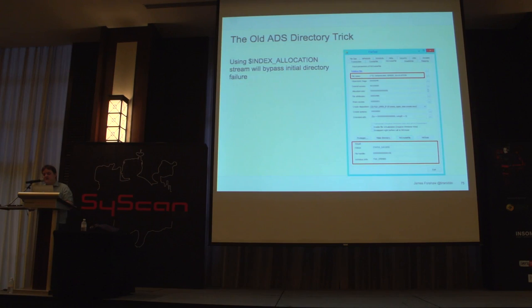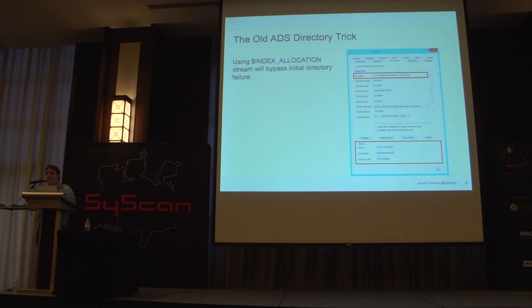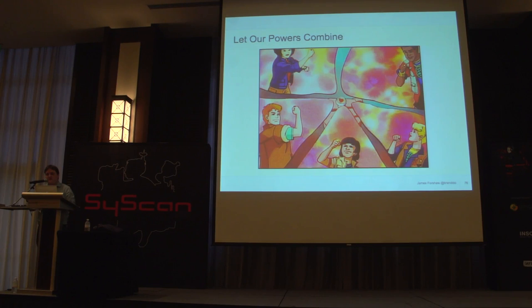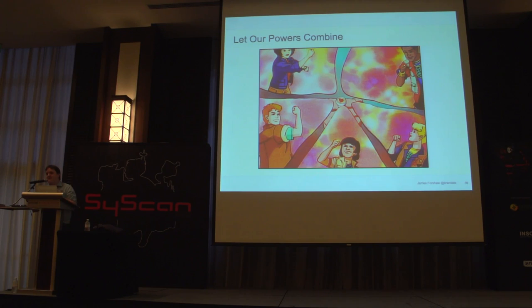There's also the old ADS stream trick of \$INDEX_ALLOCATION — specifying that as your stream type is a classic trick to create directories using normal file APIs. It also works for file-level symbolic links: specifying the name with \$INDEX_ALLOCATION at the end will actually open the target of the symbolic link, even though the target is a file. That's a bit limited, so I needed something slightly better — still needing arbitrary access with no obvious prerequisites on the call to CreateFile. We want to combine our powers: object manager symbolic links (which can do file-level type symbolic links) plus mount points (which can take arbitrary object manager paths). Can we combine those two together without requiring any privileges whatsoever?